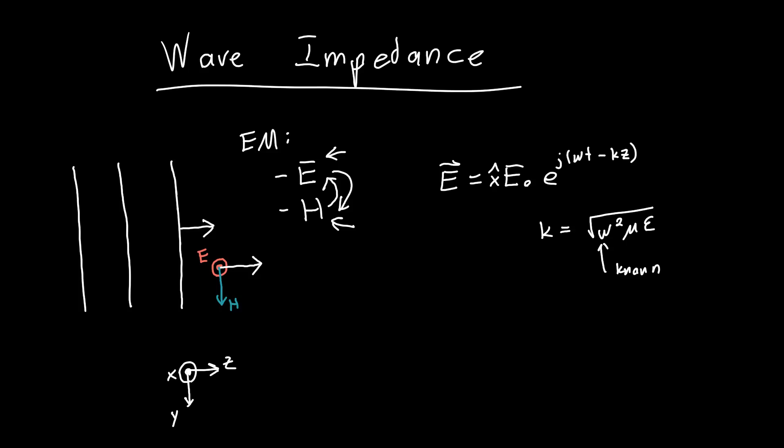Similarly, we can write our magnetic field. It's pointing in the Y direction and it's got some amplitude H₀, and it's also traveling in the same direction, so ω t minus k z. Now the question is, and the question that wave impedance answers is: what is the relationship between E₀ and H₀?